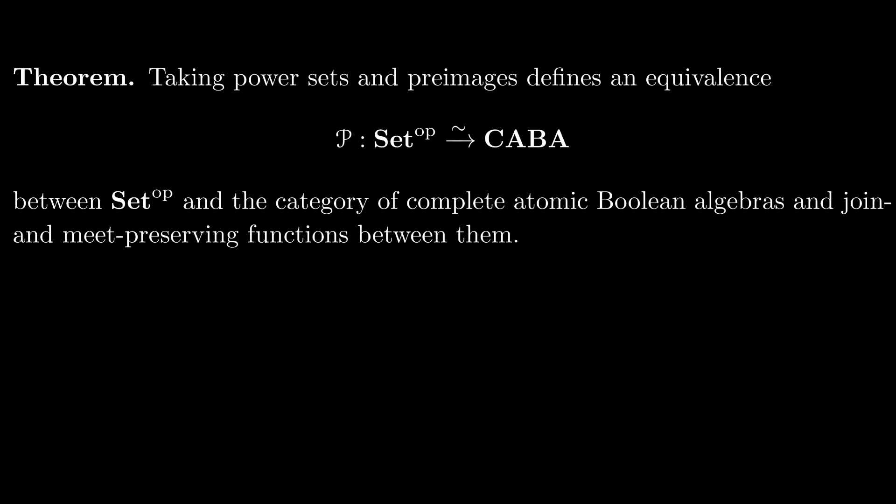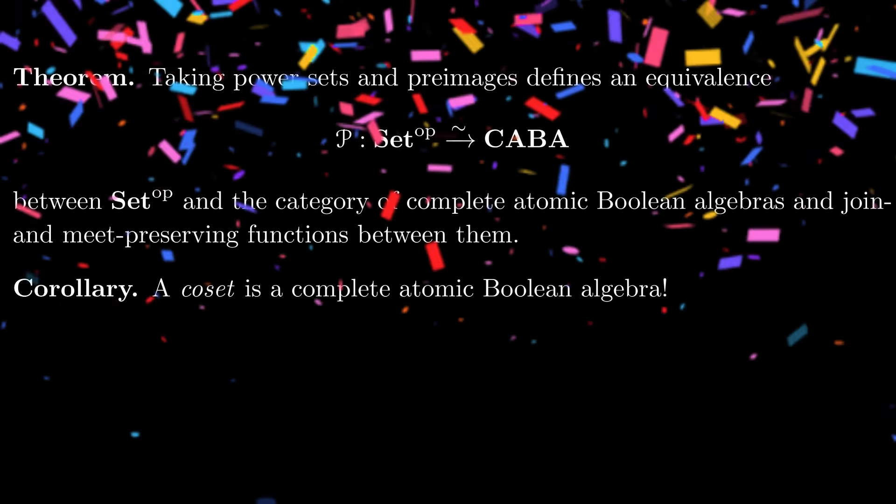With this final piece, our contravariant power set functor induces an equivalence between the opposite of the category of sets and the category of complete atomic Boolean algebras. This finally leads us to a more satisfying definition of a coset. A coset is just a complete atomic Boolean algebra.